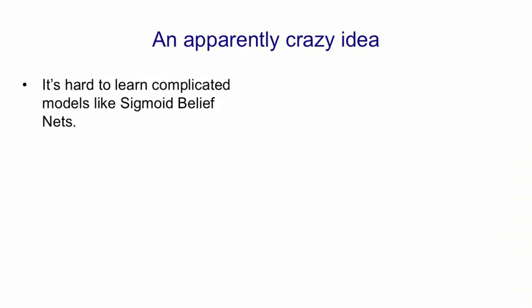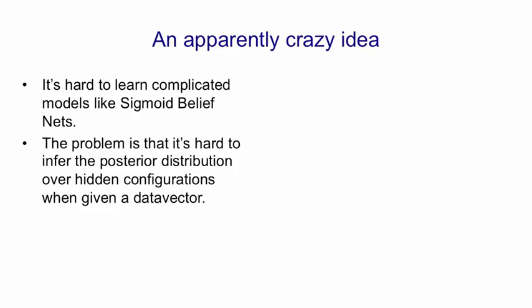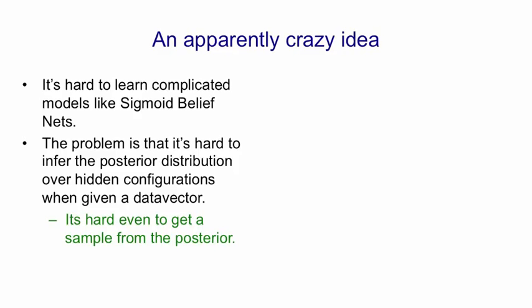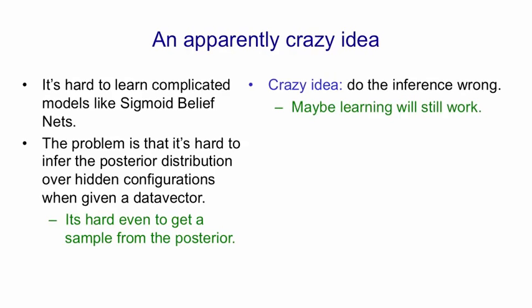To summarise, it's hard to learn complicated models like sigmoid belief nets because it's hard to get samples from the true posterior distribution over hidden configurations when given a data vector. It's hard even to get an unbiased sample from that posterior. So the crazy idea is that we're going to use samples from some other distribution and hope that the learning will still work. And as we'll see, that turns out to be true for sigmoid belief nets.